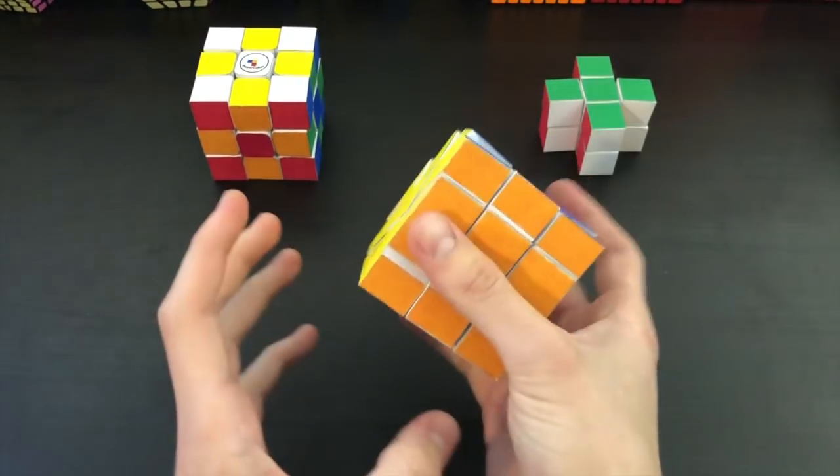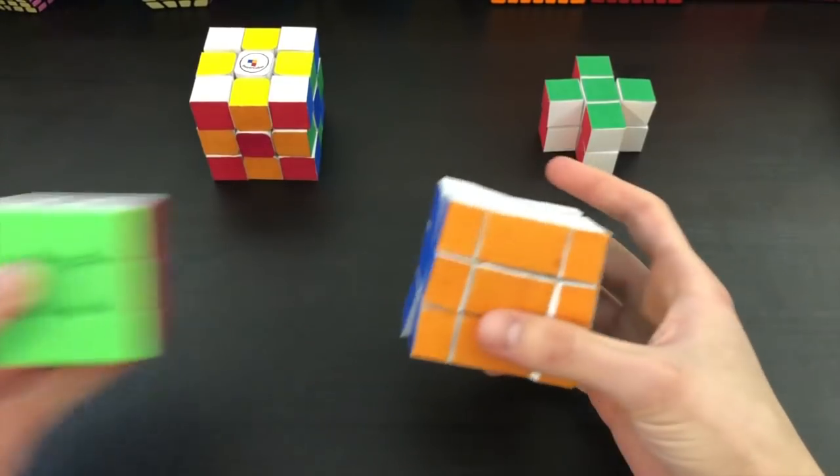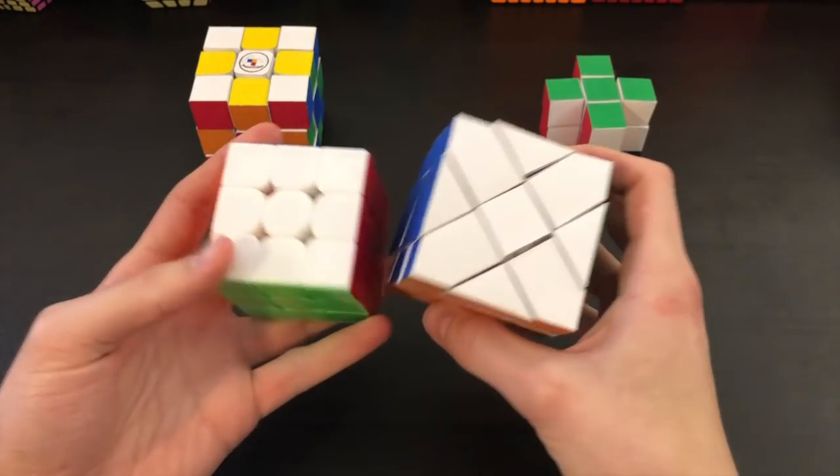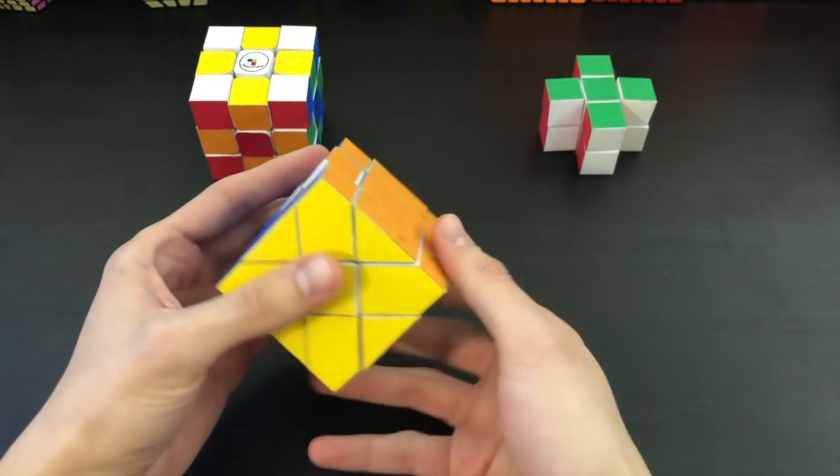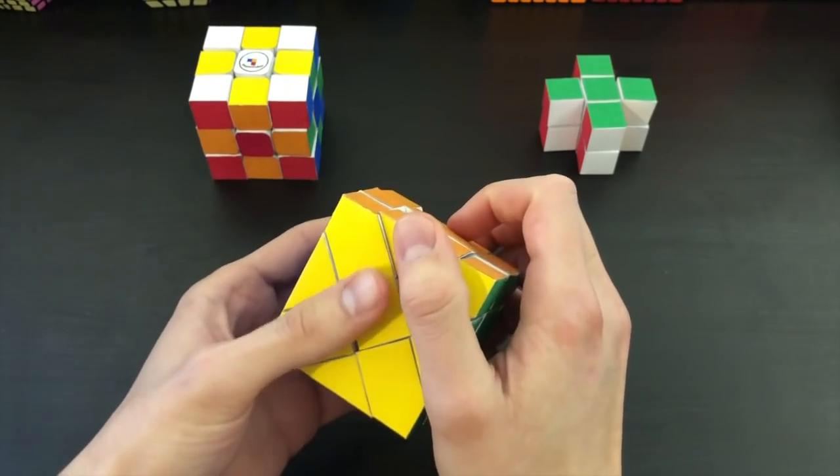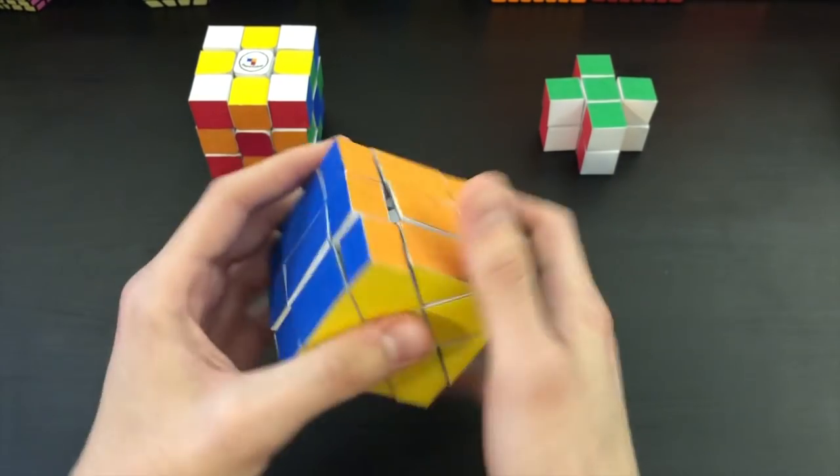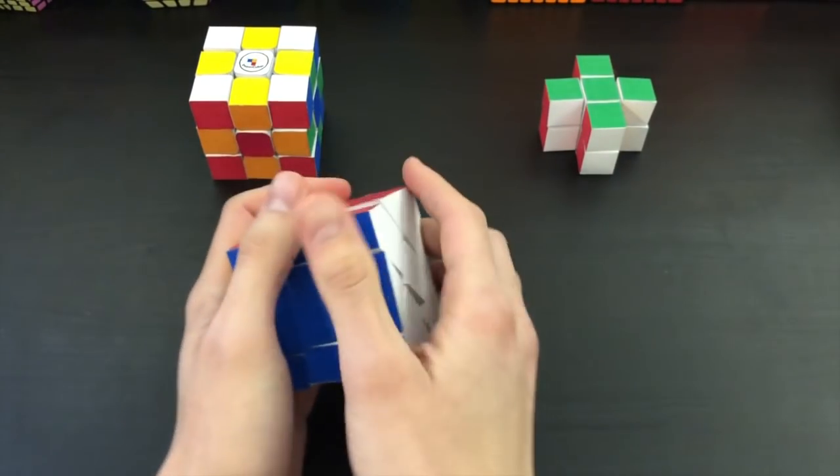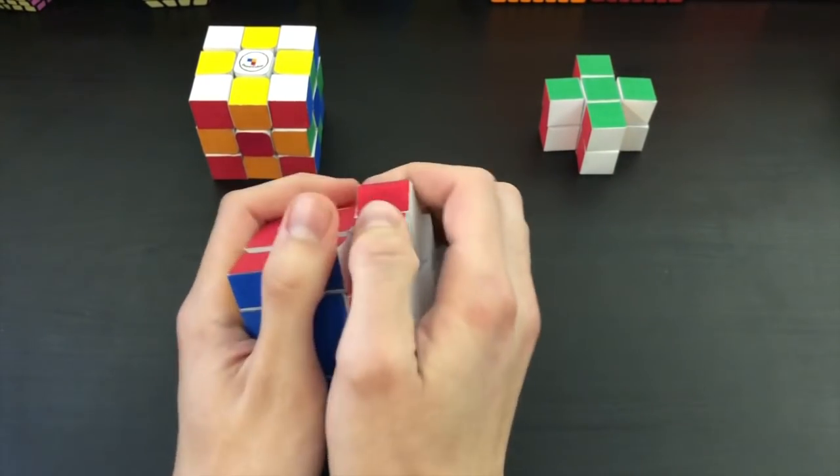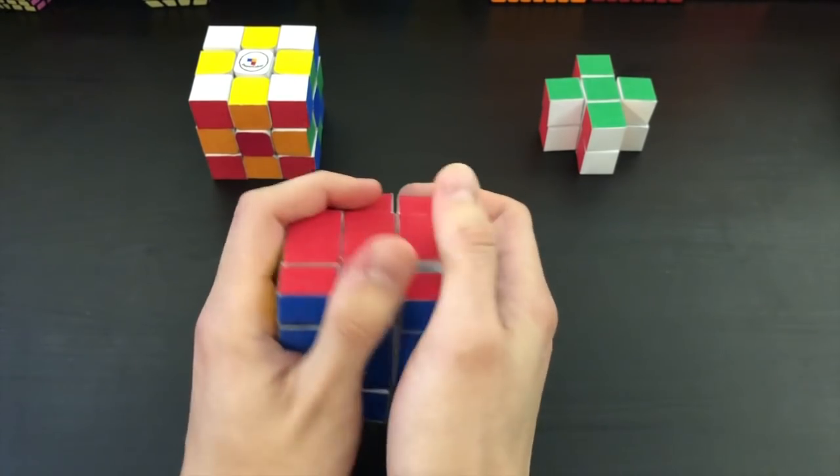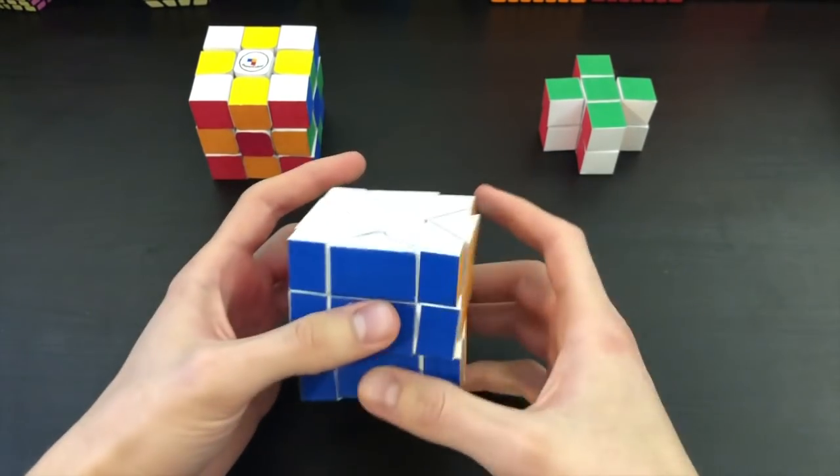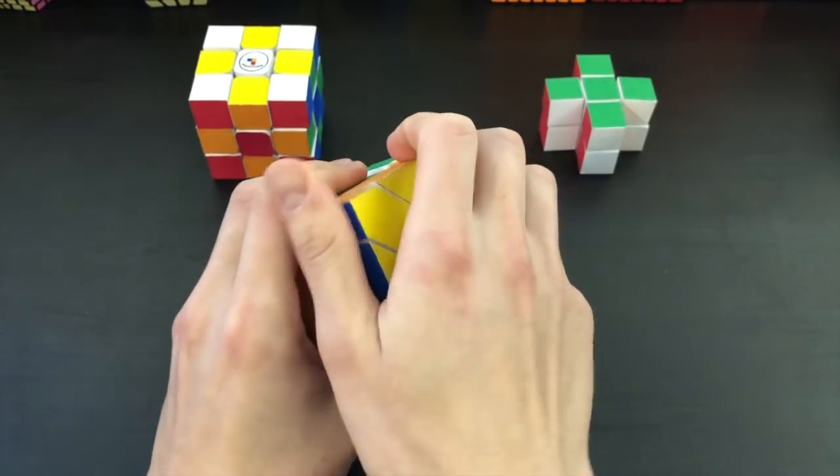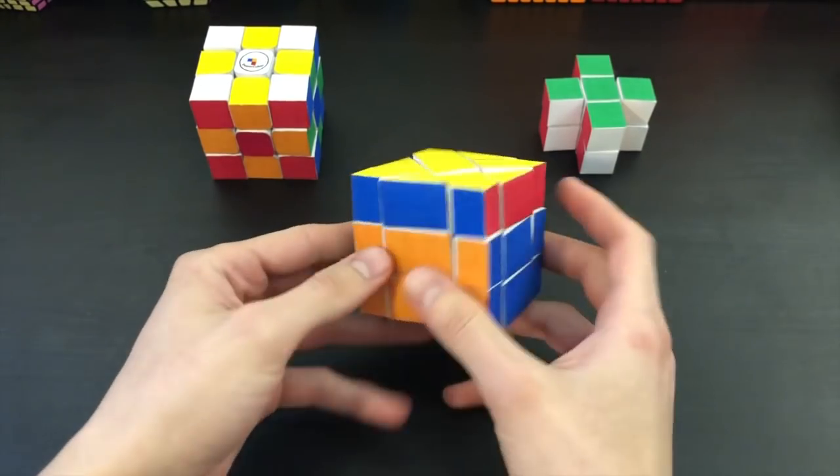All right so up next we have the paper Fisher Cube and just a quick size comparison next to a normal 3x3. There that is. So it's a bit bigger but let's go ahead and jump into first turns. That thing does not want to turn at all. Let's try one of these layers. All right that's not going to work. Oh there we go. We're getting a turn. All right we're making history guys. We got one turn done on the paper Fisher Cube.